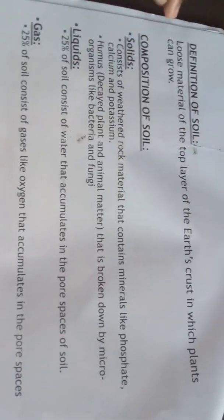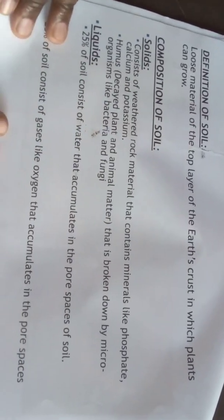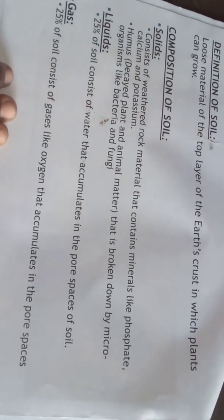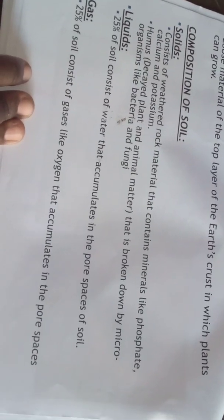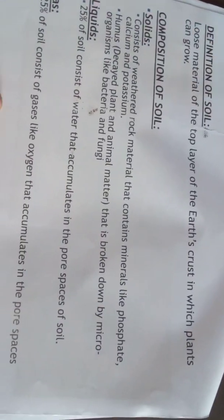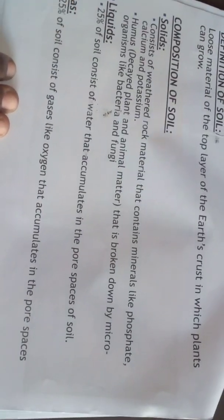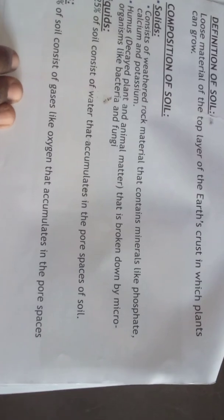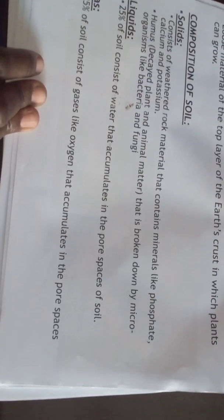Today we are going to be specific about resources — we want to look at soil as a resource. Soil is a resource you have seen in your lifetime. What is soil? Soil is the loose material on the top layer of the earth's crust in which plants grow. It consists of minute particles of certain minerals found on the earth's surface, and this is where we grow our plants.